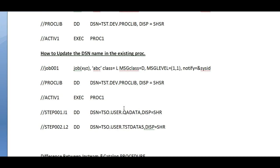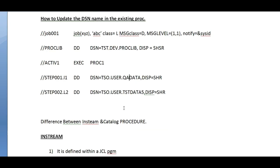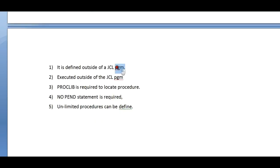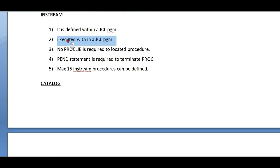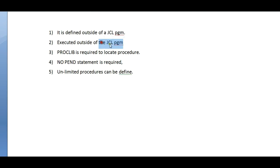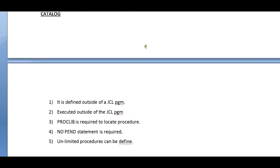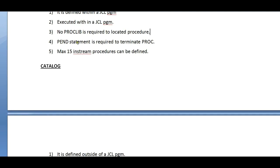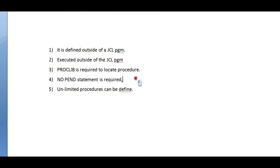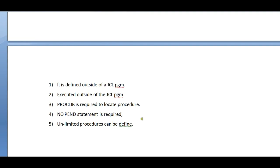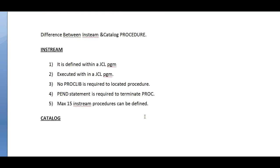That was about the catalog proc. Let's see the differences between in-stream and catalog proc in more detail. In-stream proc is defined within a JCL program, whereas catalog proc is defined outside of a JCL program. In-stream is executed within the JCL program; catalog is executed outside. No proc lib is required to locate an in-stream procedure because it is coded inside the JCL, whereas proc lib is required for catalog proc. A pend statement is required to terminate an in-stream proc; no pend statement is required for catalog proc. Maximum 15 in-stream procedures can be defined, whereas in catalog, unlimited procedures can be defined.